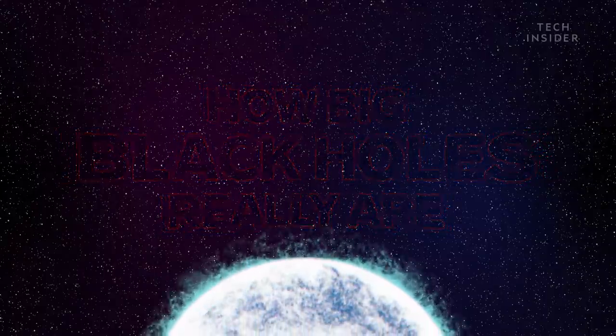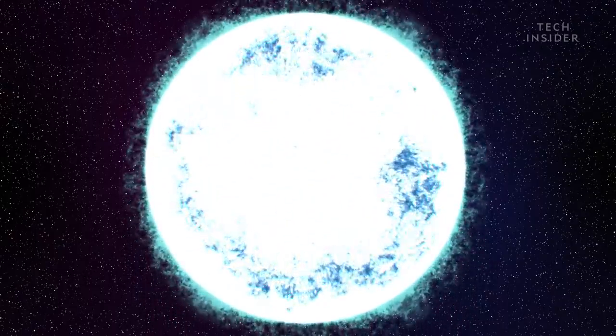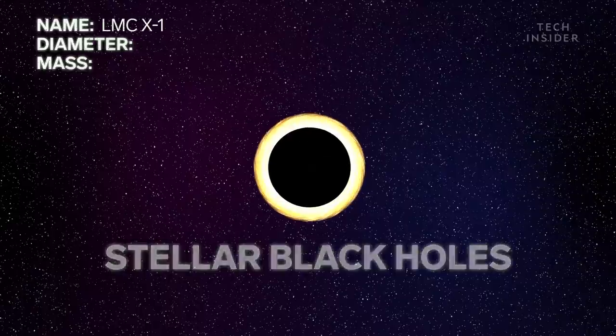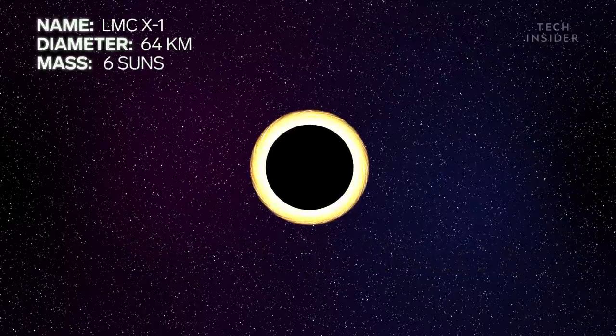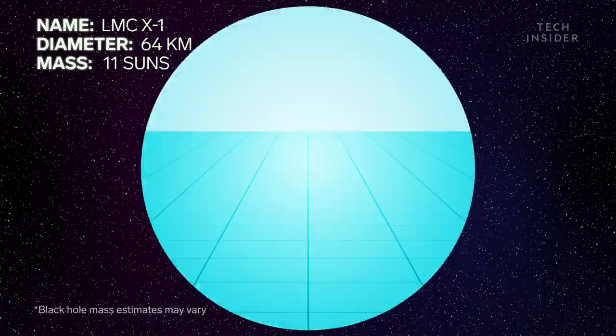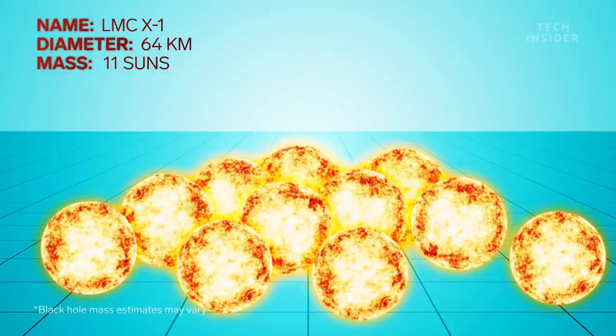There are three common types of black holes. The smallest are stellar black holes, which form after a giant star explodes and collapses in on itself. Like this one, which measures about 40 miles across, roughly three times the length of Manhattan. But in that small space is enough mass to equal 11 of our suns.